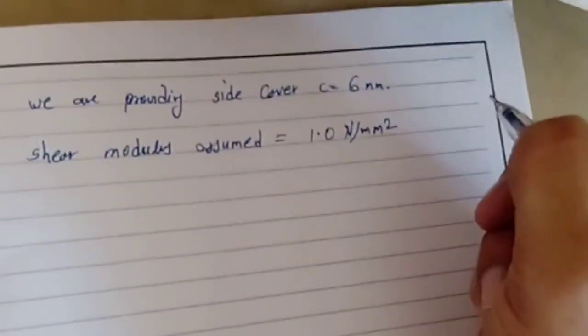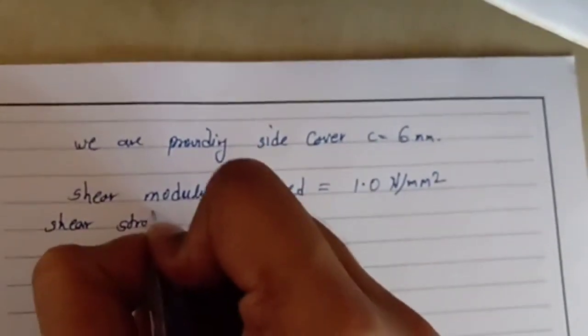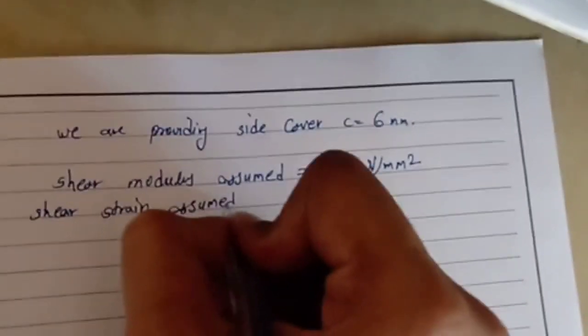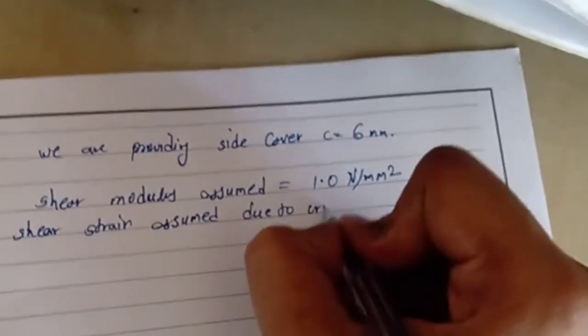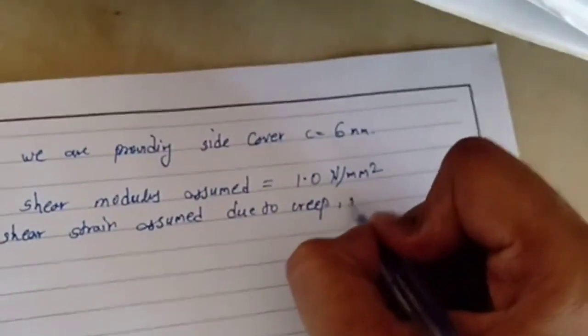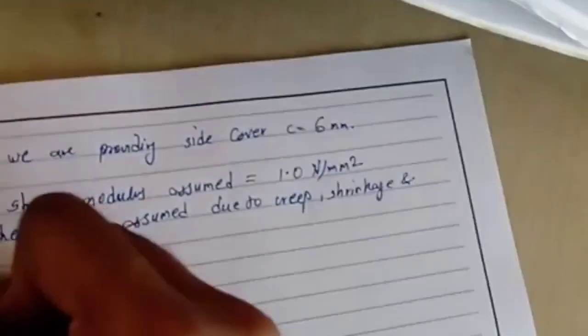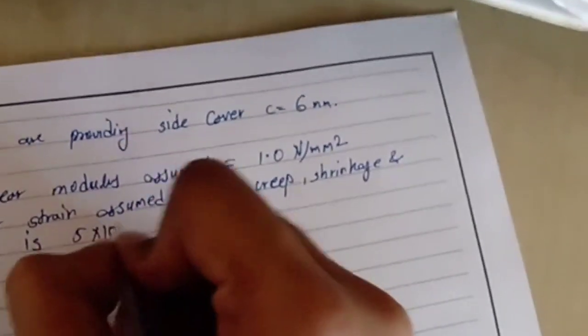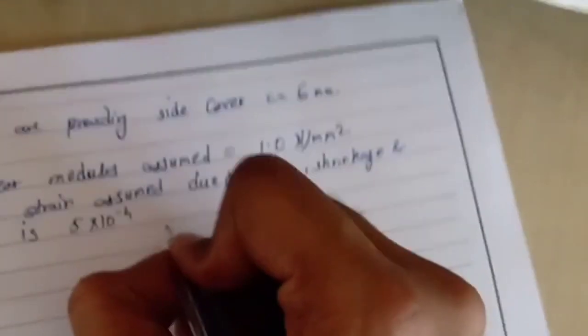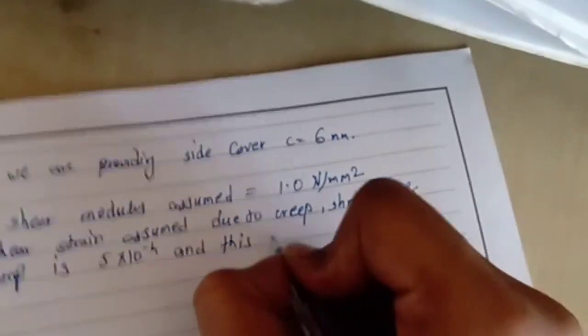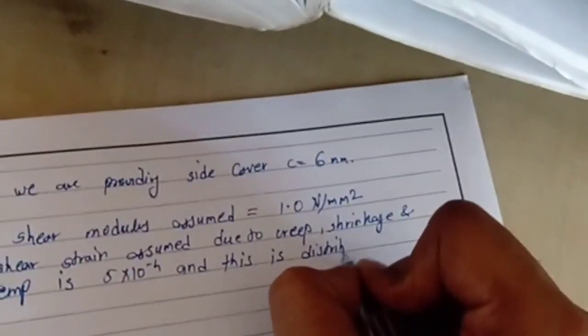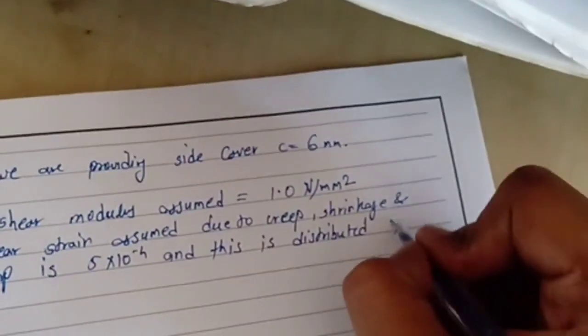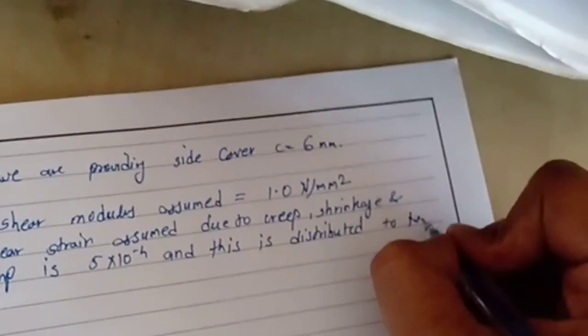That is 1 newton per mm square. The shear strain assumed due to creep, shrinkage, and temperature: the shear strain is 5 x 10^-4, and this is distributed to 2 bearings.